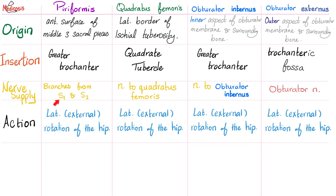Piriformis is very close to the sacral plexus — it takes from S1 and S2. Quadratus femoris has its own nerve: nerve to quadratus femoris. Obturator internus has its own nerve, but obturator externus is very close to the obturator nerve and just takes from it — remember, the obturator nerve passed through the obturator canal above the obturator externus. Obturator internus originates from the inner aspect of the obturator membrane; obturator externus from the outer aspect. Quadratus femoris originates from the lateral border of the ischial tuberosity. Piriformis arises from the anterior surface of the middle three sacral pieces and passes through the greater sciatic foramen, dividing structures into those above and below it — including the sciatic nerve.